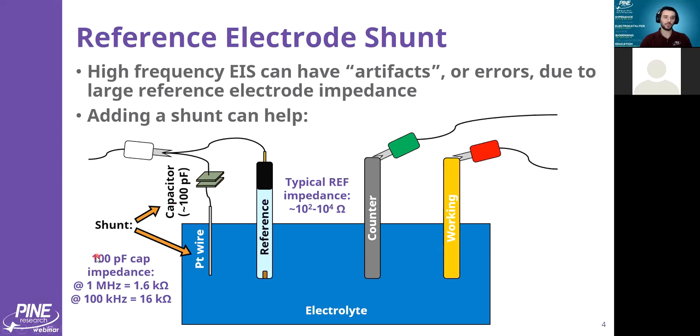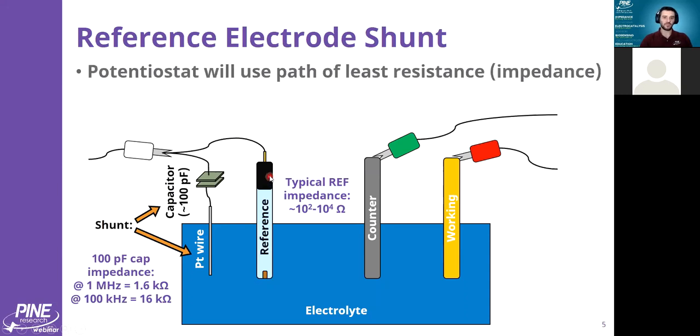For example, numerically, a 100 picofarad capacitor has an impedance of 1.6 kiloohms at a megahertz. And as I go down in order of magnitude, my impedance goes up in order of magnitude.